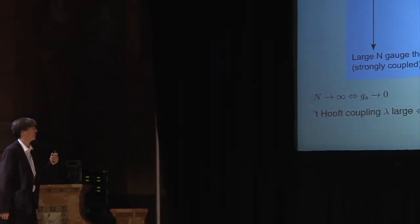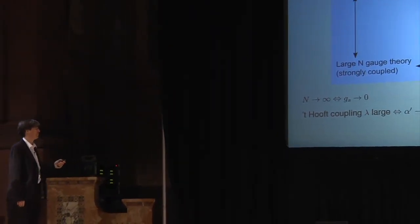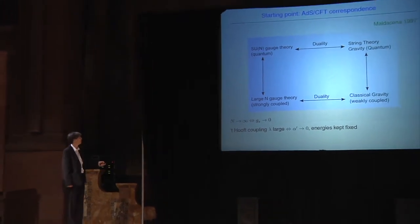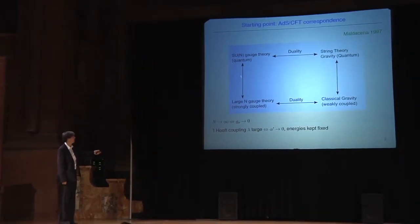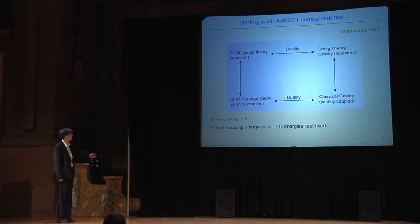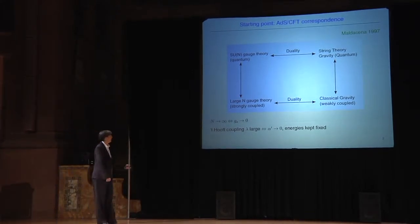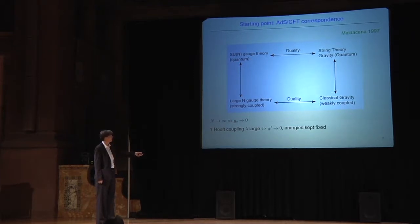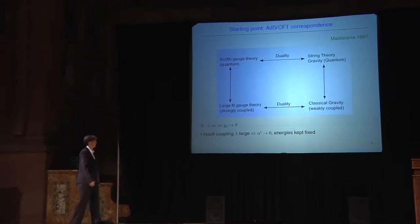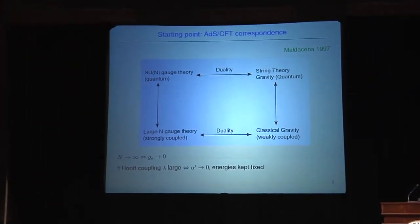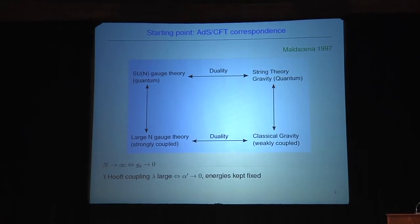In the so-called Maldacena limit, which is a very important decoupling limit, this field theory goes to a large-N gauge theory which is strongly coupled in the sense that the 't Hooft coupling is large, and this quantum theory of gravity goes to classical gravity with point-like particles and is weakly coupled. So in addition to the intrinsic interest in this proposal,